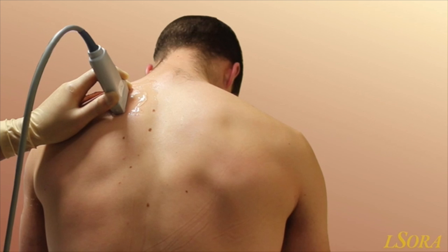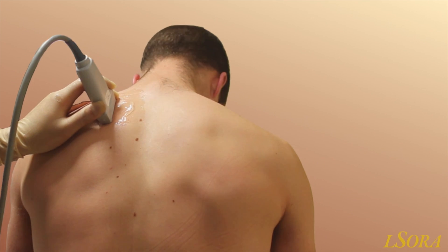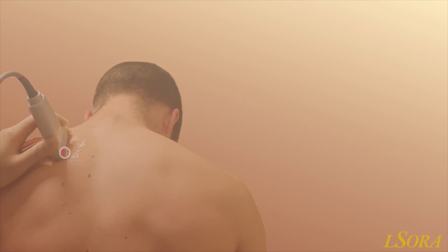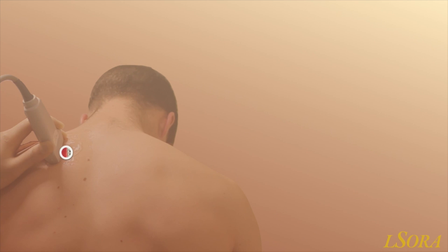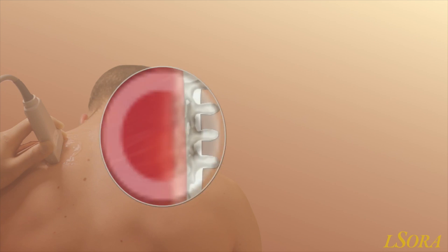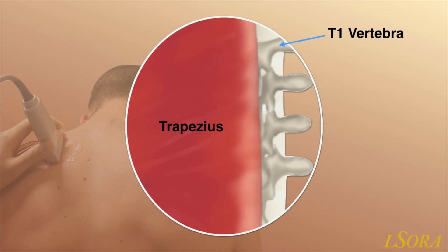To generate our image, we use a high frequency linear probe placed in the paramedian orientation to generate a sagittal slice through the patient's upper thorax. We start by scanning lateral to the midline. Underneath the skin and subcutaneous tissue, you will visualise the trapezius muscle.